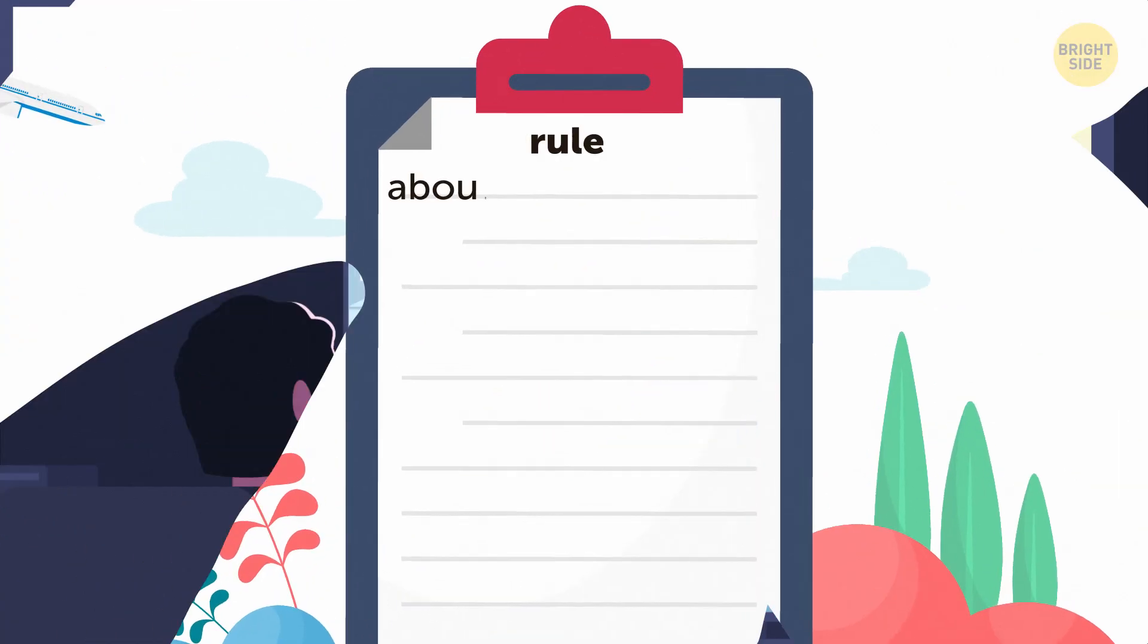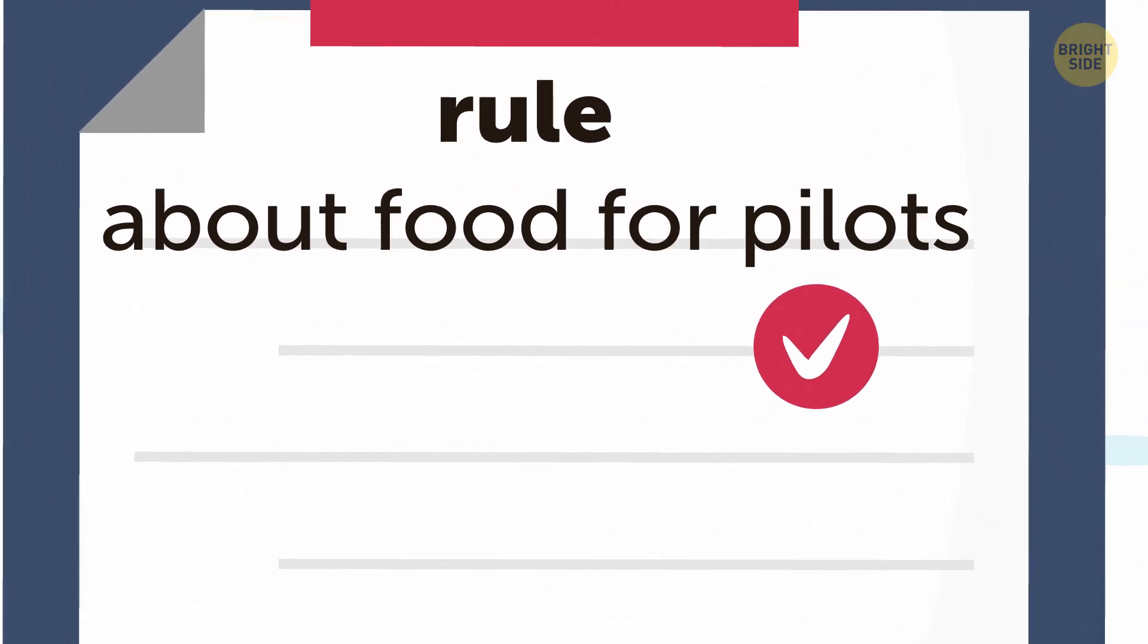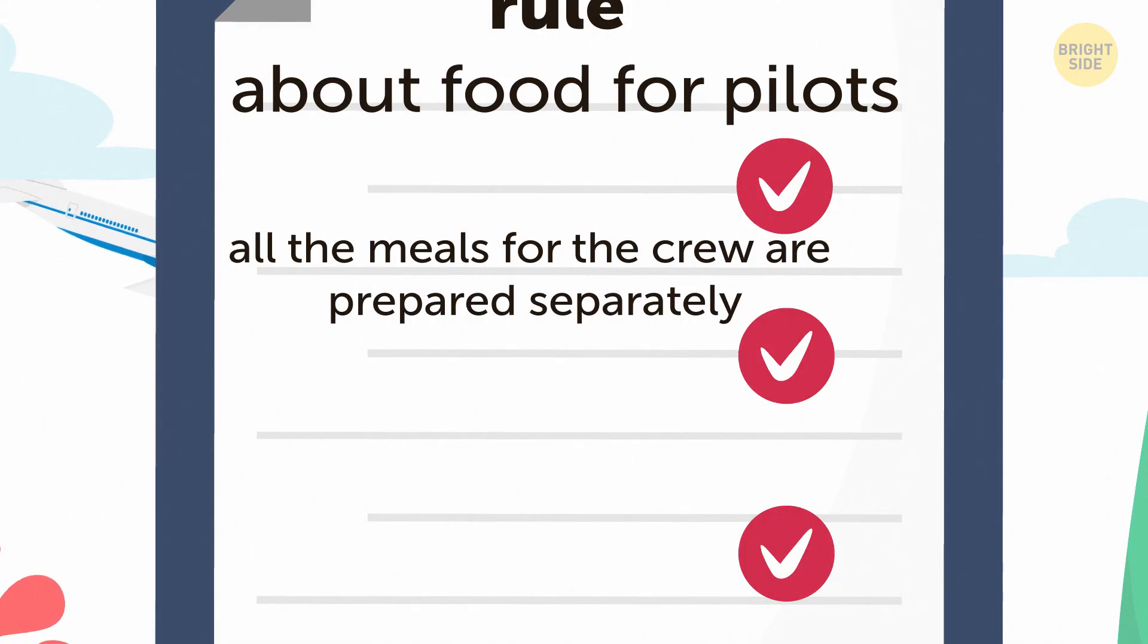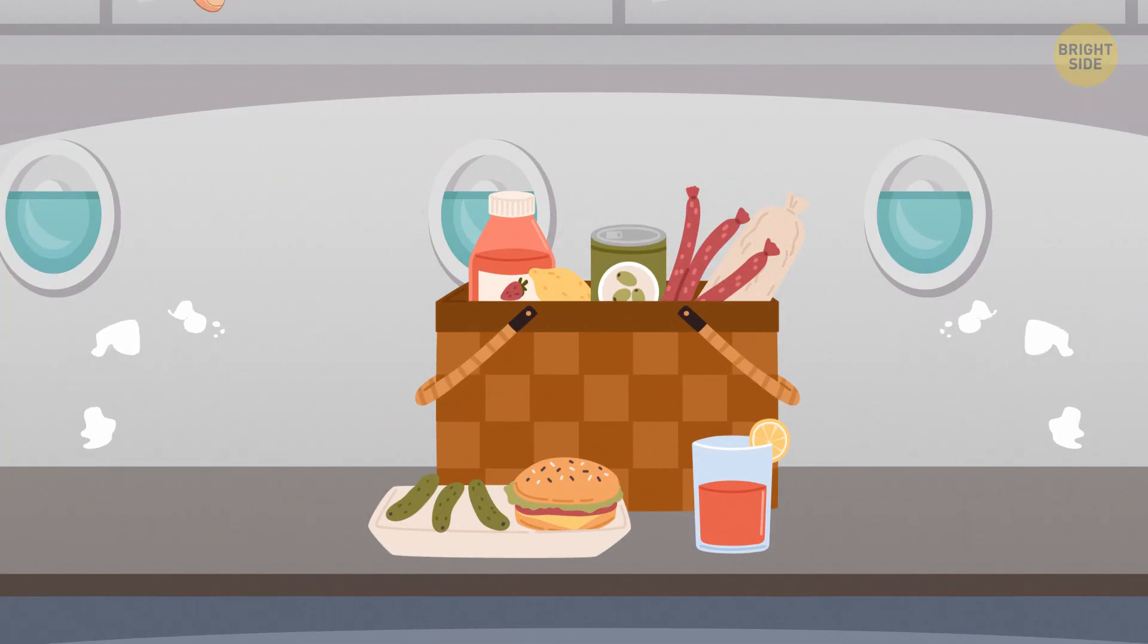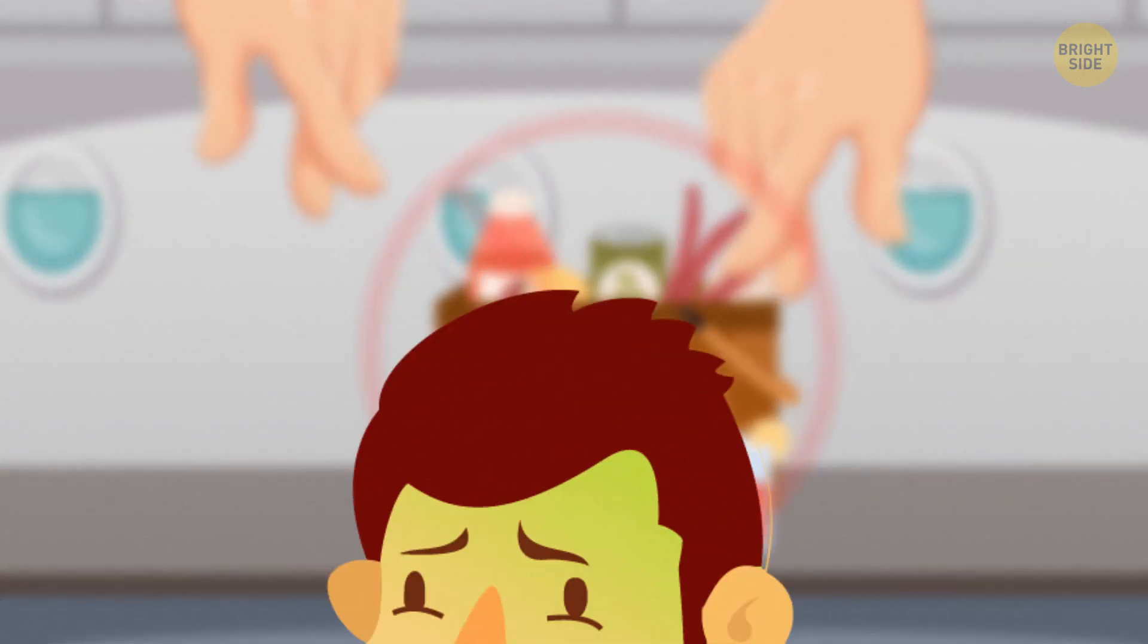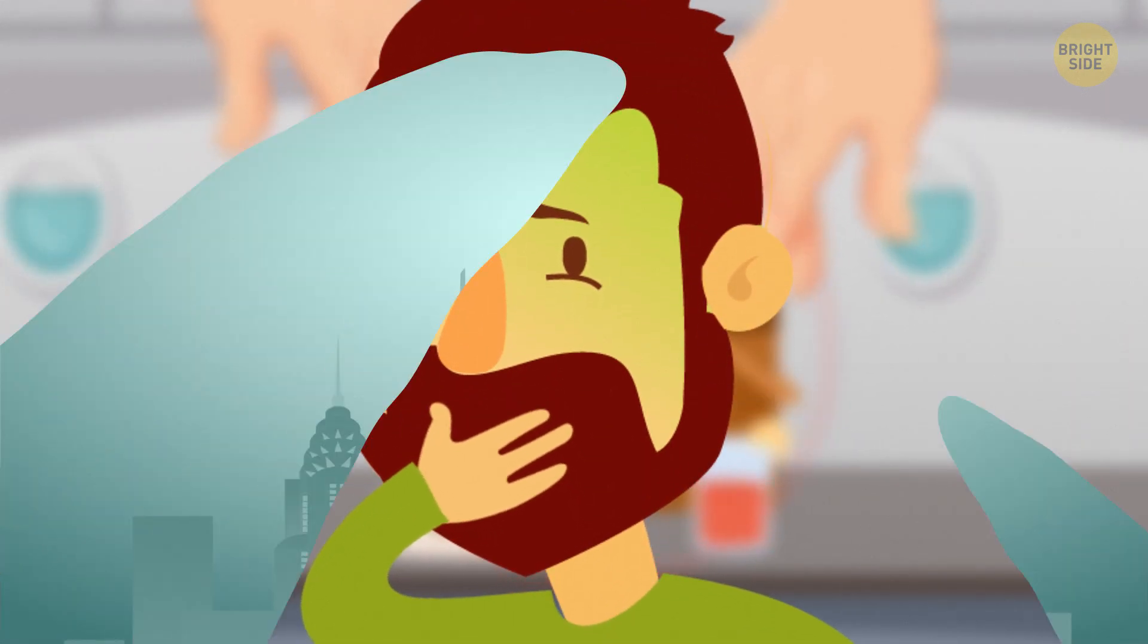The ICAO has a strict rule about food for pilots. All the meals for the crew are prepared separately. The two pilots can't have the same meal. This is done so that the second pilot can replace the first one if he gets food poisoning. They're only human after all.